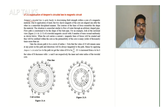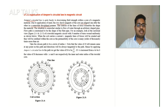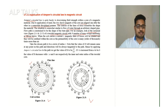Application of Ampere's circuit law in a magnetic circuit: Ampere's circuit law is quite handy in determining field strength within the core of a magnetic material due to application of MMF. The tiny magnetic dipoles of the core are aligned one after another in a somewhat disciplined manner. The contour of the lines of force resembles the shape of the material — similar to flow of water through an arbitrarily shaped pipe. For example, look at the sectional view of a toroidal magnetic circuit with N number of turns wound uniformly. The cross symbol represents current going into the plane, and the dot represents current coming out of the plane.